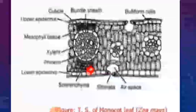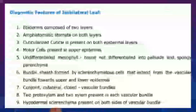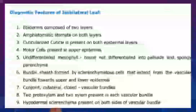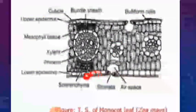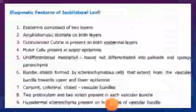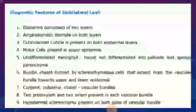Such a condition where stomata are present on both surfaces is known as amphistomatic. Additionally, the cuticle is present on both epidermis layers — on the upper as well as on the lower epidermis.